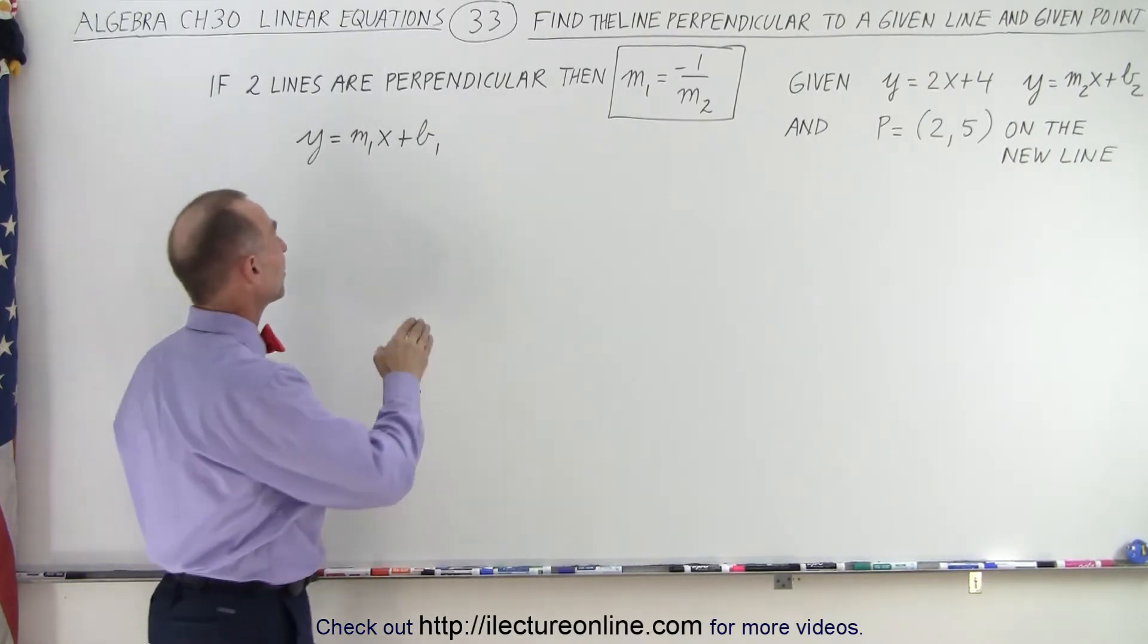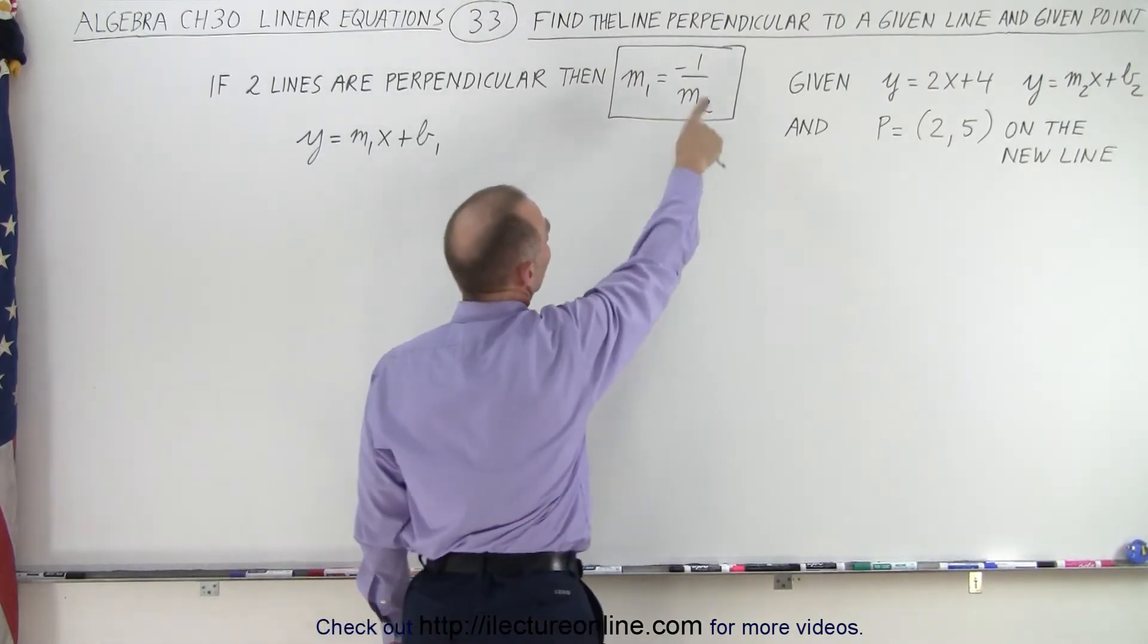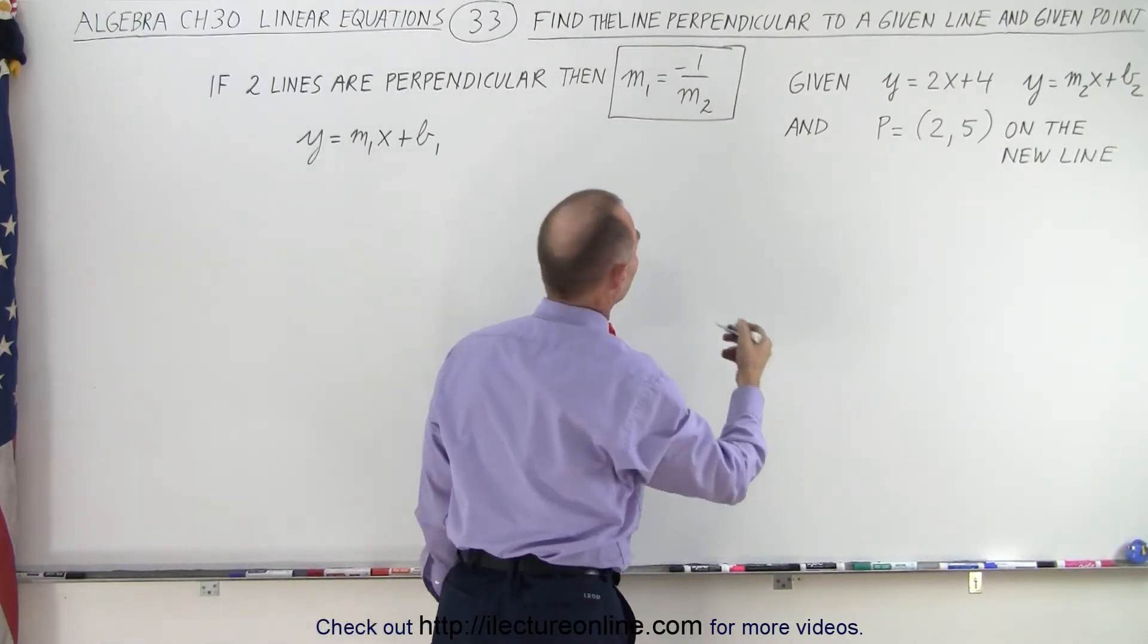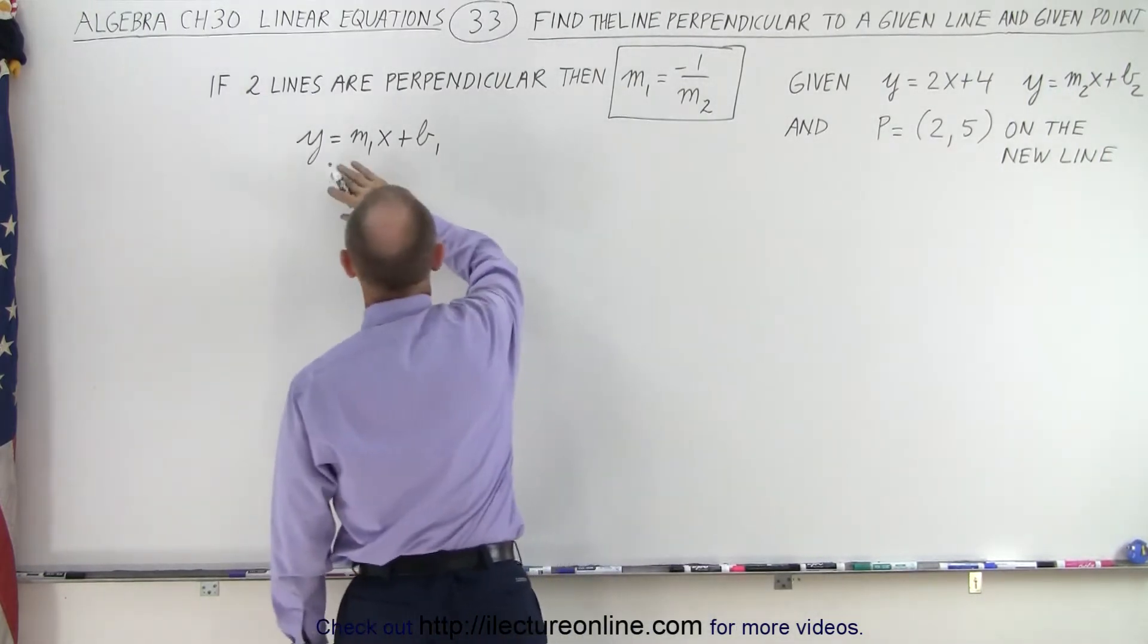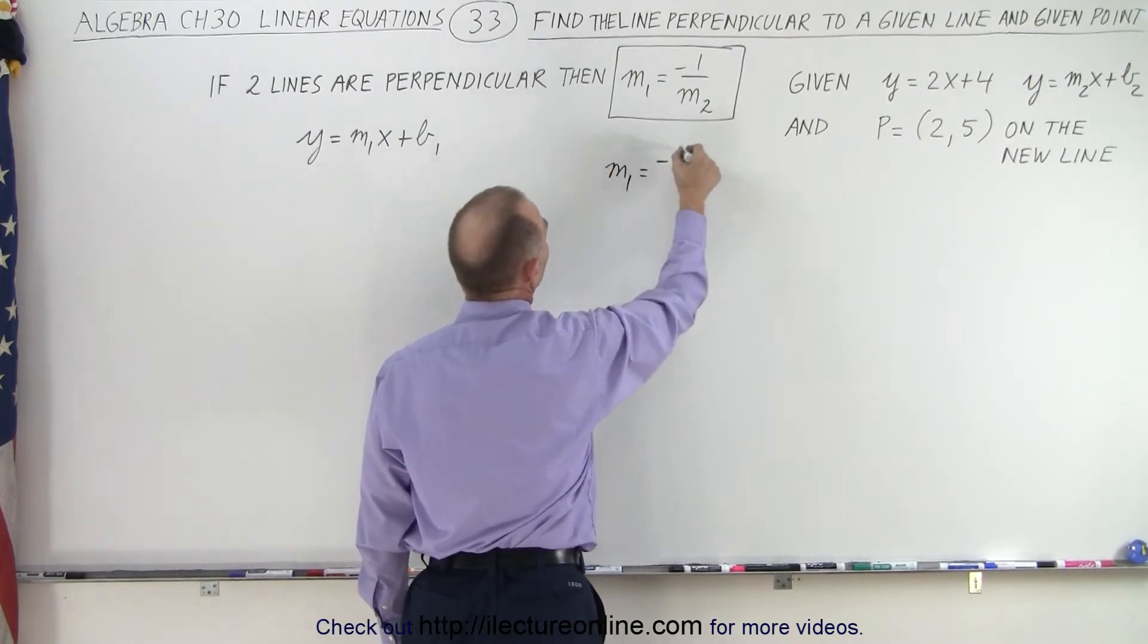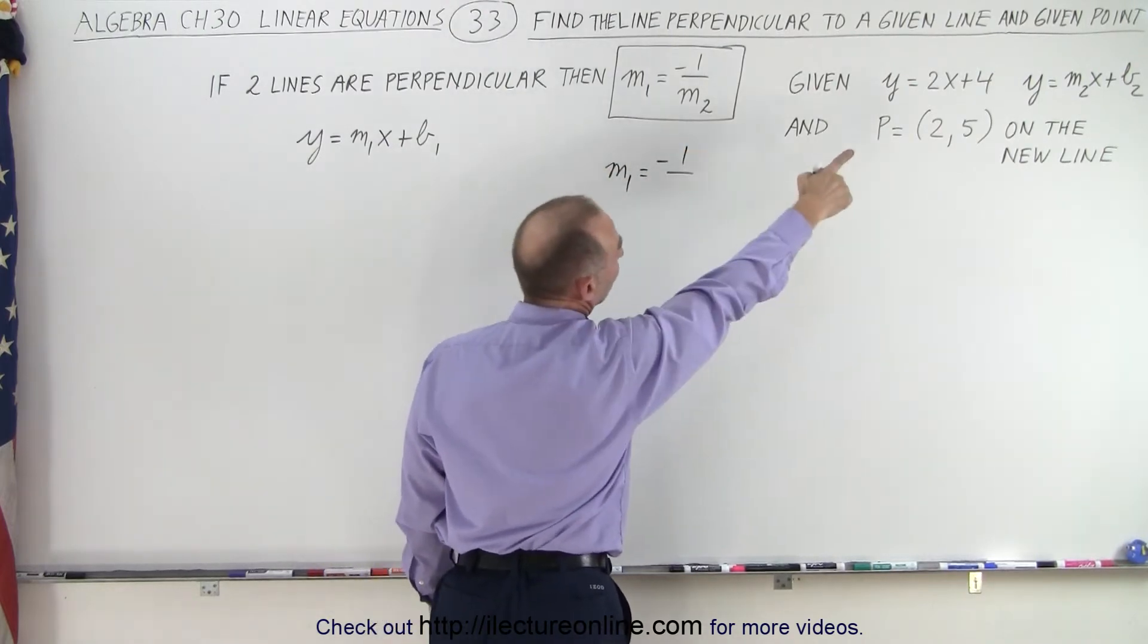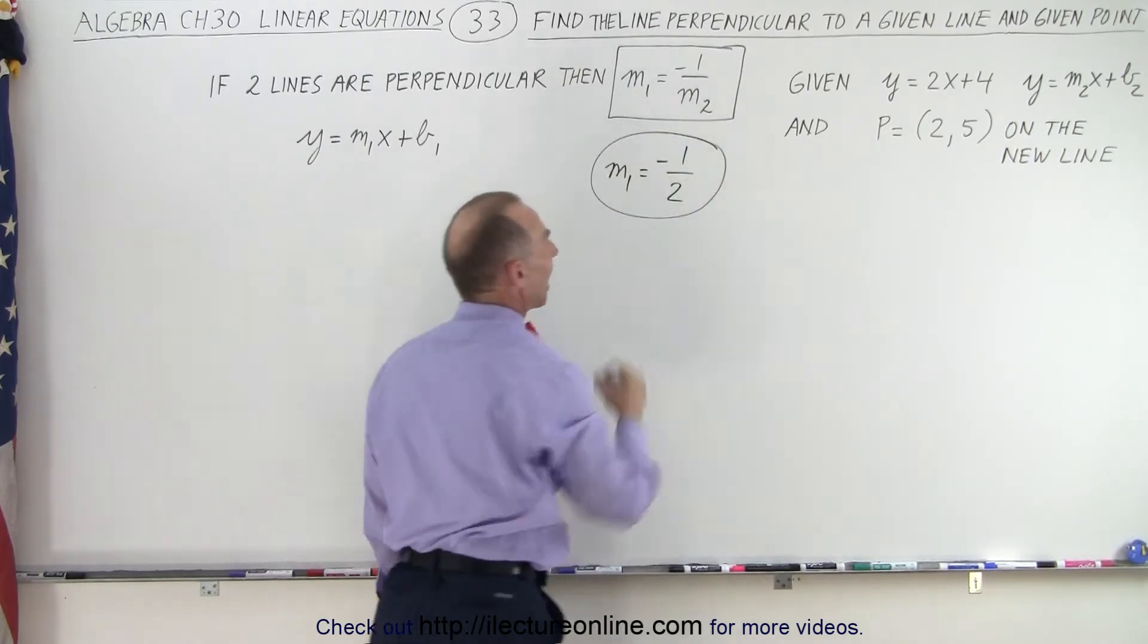So first of all we're going to do the same thing. We're going to find the equation in this format and we're going to use this condition to find the slope of the second line, or in this case let's call that the second line. We're looking for the slope of the first line so that m1 is equal to negative 1 over m2. m2 is equal to 2, so that means m1 is equal to negative 1 half.